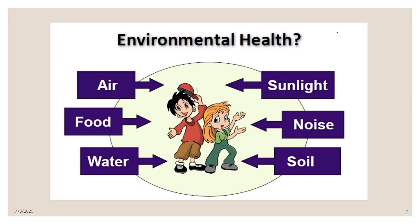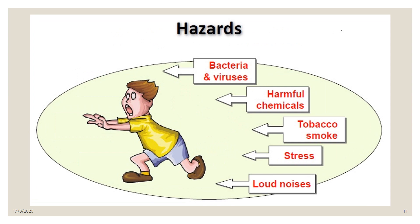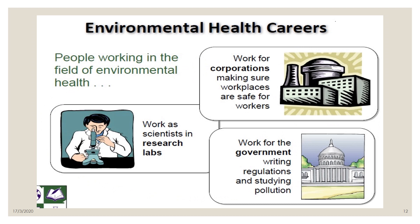In environmental health, key environmental elements are air, food, water, sunlight, noise, and soil. Good things around us include limited carbon dioxide, nutritious food, medicine, vitamins, beautiful sceneries, family, and friends. Hazardous things include bacteria, viruses, COVID-19, harmful chemicals, tobacco smoke, stress, and loud noises.